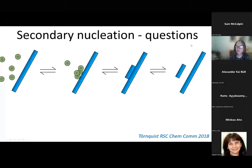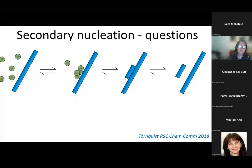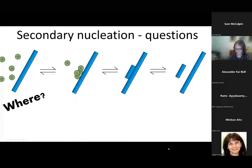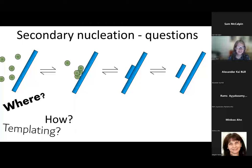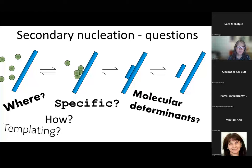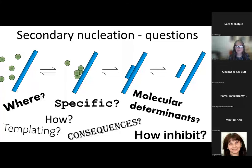I will frame this talk around questions. I will not describe the discovery of secondary nucleation, but rather the questions we are asking now. We formulated several of these questions in a perspective article in RSC Chemical Communications in 2018. We ask: Where does it happen? How does it happen — what are the molecular events? Is there a templating role, like you see in elongation? Is it a specific process? Can we learn anything about the molecular determinants? What are the consequences? And how can we possibly inhibit this process?